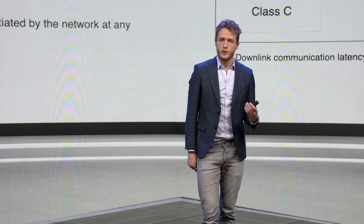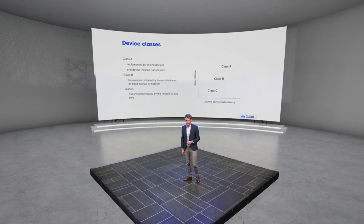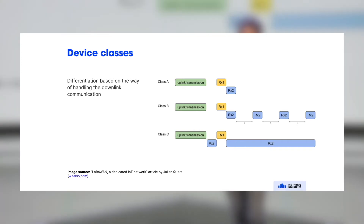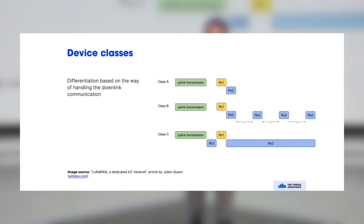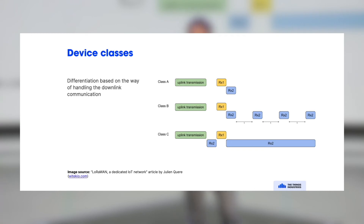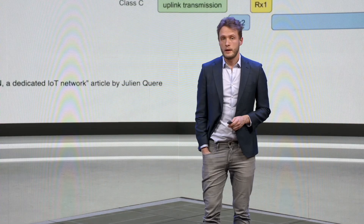The main difference between device classes is battery lifetime, with the trade-off being communications delay. There are receive windows — the end device sends a message, then an Rx1 window opens, followed by a second receive window exactly one second later. With Class B, this receive window recurs on an interval — every tens of seconds, half a minute, or a couple of minutes. In Class C, this window stays open all the time, so whenever a blue or yellow window appears, the network can send a message to the end device.